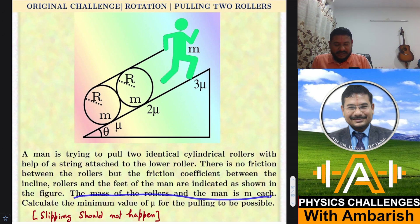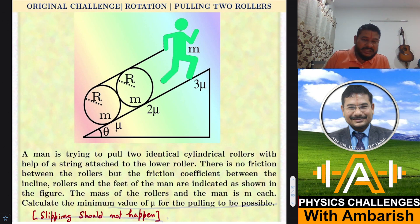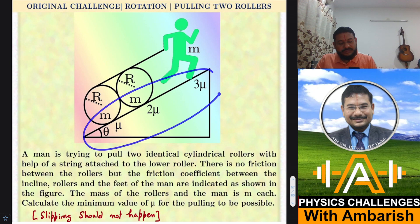The mass of the rollers and the man is m each, so all three have mass m. Calculate the minimum value of μ for the pulling to be possible. We don't want any slipping to happen, so they should be able to move without slipping. What should be the minimum value of μ?